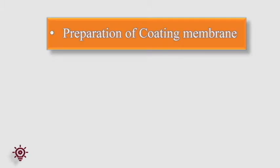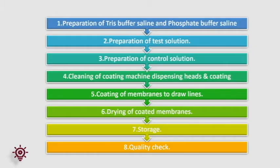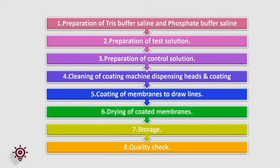Now I will focus on the preparation of the coating membrane and how it is done. Equipment required includes a coating machine, micro pipette, and drying oven. Steps involved in this process are: preparation of TBS or PBS, preparation of test solution, preparation of control solution, cleaning of coating machine and tubing, coating process, drying, storage, and lastly quality control check or testing.